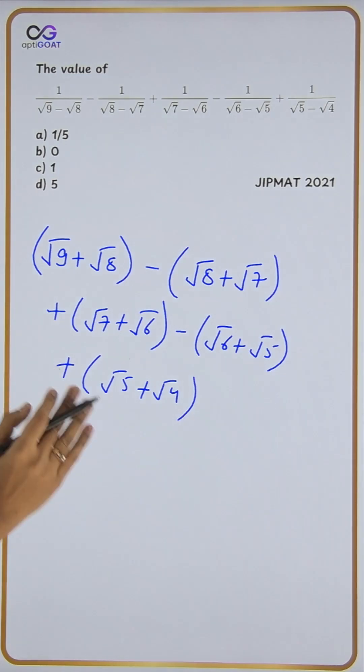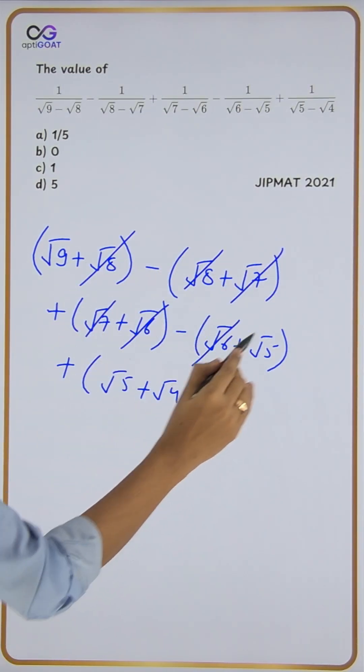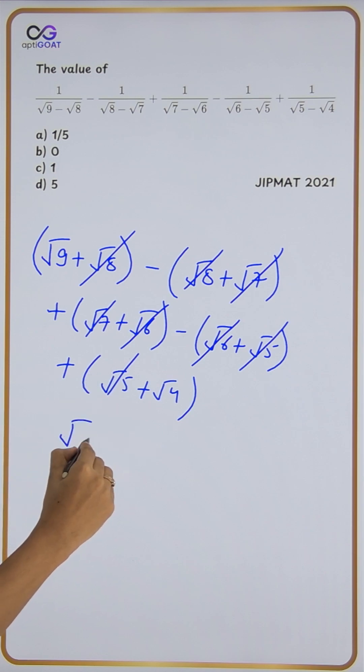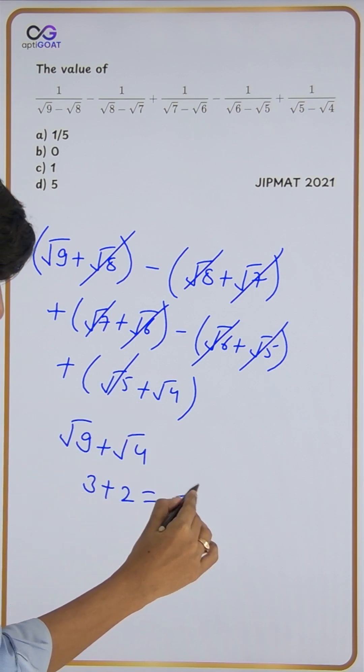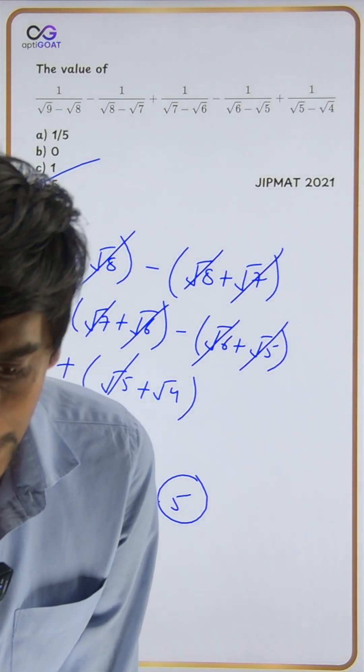After all the cancellations, what remains is root 9 plus root 4, which equals 3 plus 2, which equals 5. So 5 is option D. Select option D and we'll get 4 marks. Thank you.